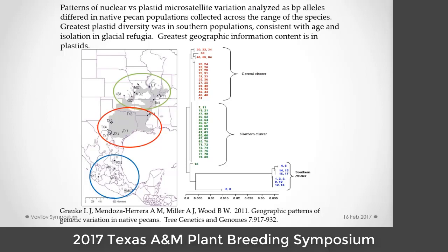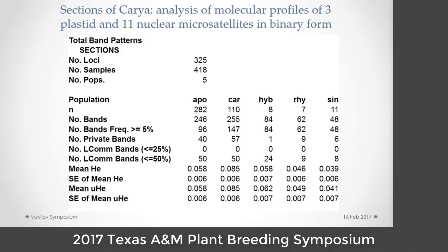The first goal is to work together to develop the tools to characterize the foundations of diversity. When we looked at our plastid markers, they were very informative for geographic populations. When we looked at nuclear markers, they weren't nearly as informative. That tells me I would like to have SNPs associated with plastids. When we take our three plastid and 11 nuclear microsatellites in binary form and look at the sections, we got 325 loci looking at 418 samples divided into five populations, with Rhizocaryon juglans as an outlier.